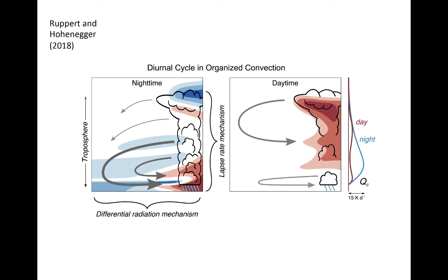This figure illustrates the main mechanisms involved in the diurnal cycle of convection. During nighttime, shown on the left panel, two mechanisms dominate. The first is by altering the lapse rate. During nighttime, the bottoms of clouds warm because they absorb longwave radiation emitted upward from the surface below and emitted downward from cloud above. At the tops of clouds, radiative cooling occurs because longwave radiation escapes to space and is only absorbed from emissions below. The low-level warming and upper-level cooling steepens the lapse rate in the troposphere, making the environment more unstable and promoting more intense updrafts.